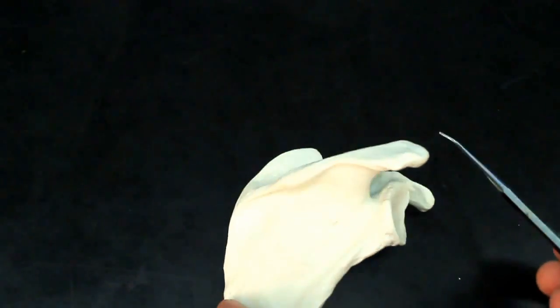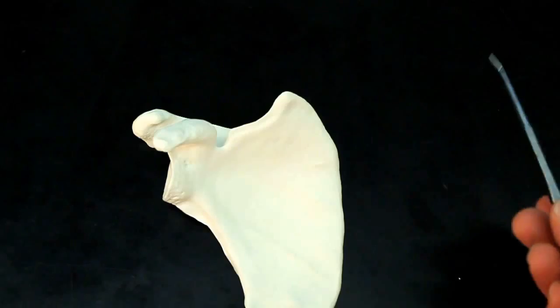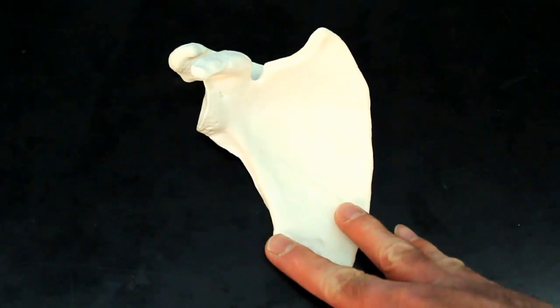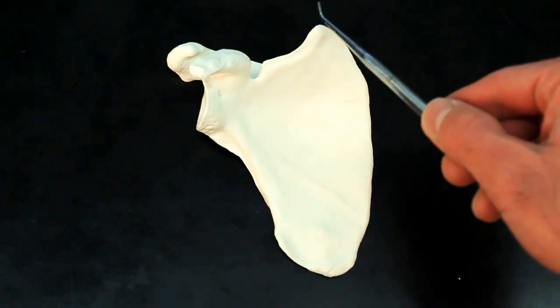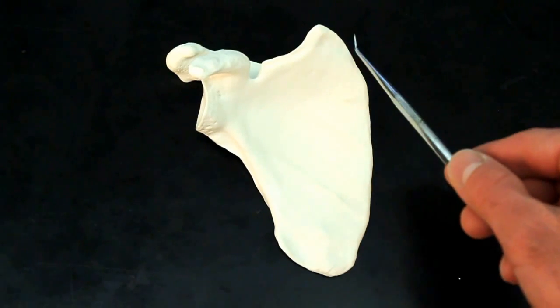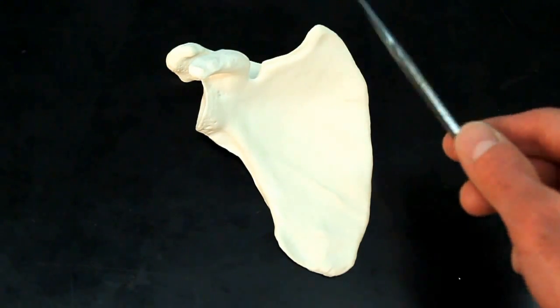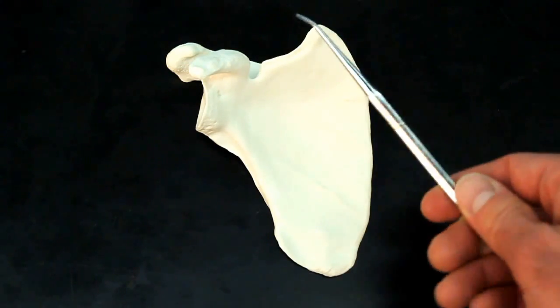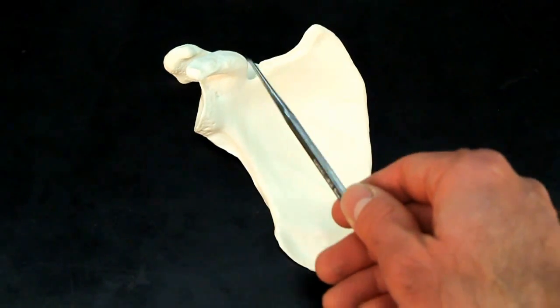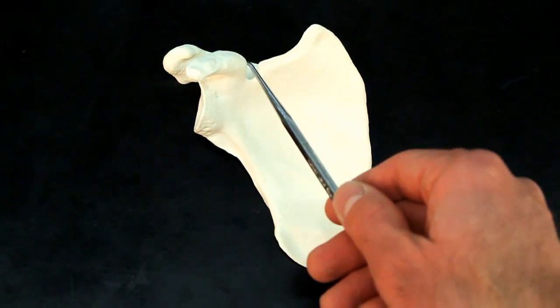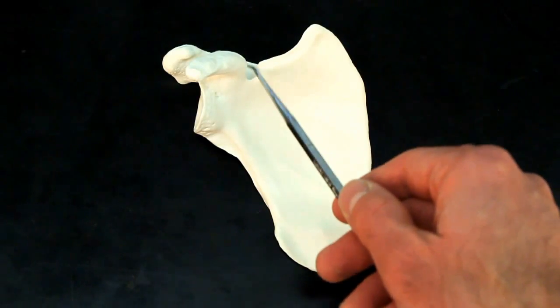Now, if we go back and look from the anterior view, we're going to notice that we have this point up here. This point is going to be the superior angle. While this indent right here is going to be the scapular notch.